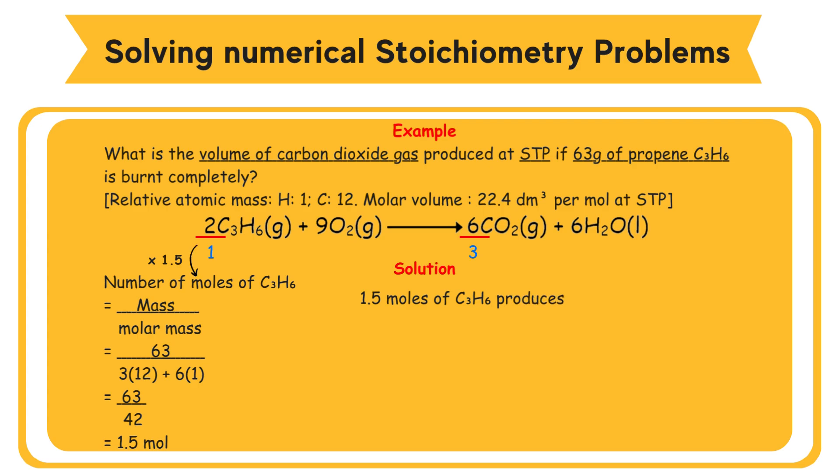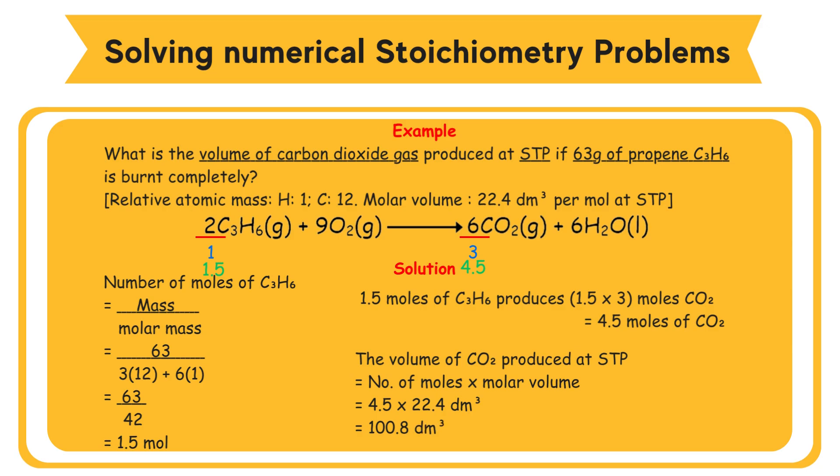The volume of CO2 produced at STP equals number of moles times molar volume equals 4.5 times 22.4 cubic decimeters equals 100.8 cubic decimeters.